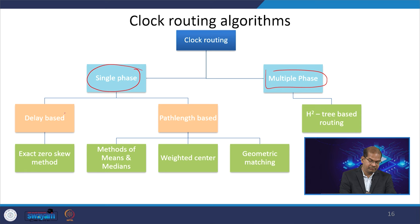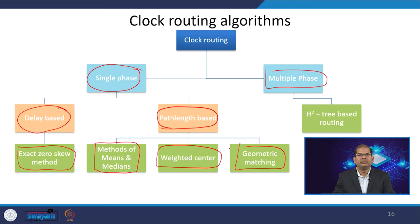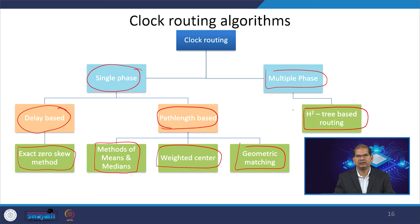For single-phase clocks we have delay-based and path-length-based algorithms. The delay-based algorithms include the exact zero skew method and the method of means and medians. Path-length-based algorithms include weighted center and geometric matching. These three are path-length-based optimization algorithms used for clock tree synthesis. For multiphase clocking, a square-tree-based routing is also employed.